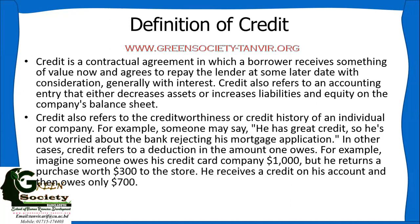So what is credit? You can define credit in so many ways. You know what credit is, but we want to define it as part of the course, and that's why we need to define it textually or from experience. Credit is a contractual agreement. There are two parties: one is the borrower and another one is the lender. Credit is a contractual agreement in which a borrower receives something of value now and agrees to repay the lender at some later date with consideration — generally with interest or profit.